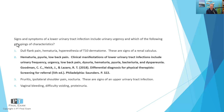Dysuria means painful urination. Hematuria means blood in the urine. Pyuria indicates white blood cells in the urine. Bacteriuria is where you have bacteria in the urine. And dyspareunia is pain with intercourse, caused by the inflammation and infectious process occurring in the lower urinary tract. These are the classic symptoms of a lower urinary tract infection.